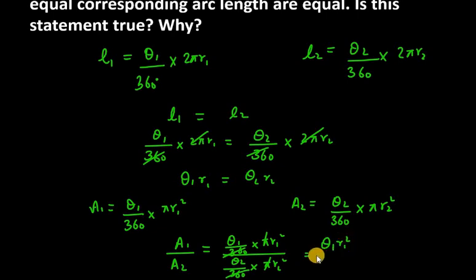You are left with θ₁r₁ square over θ₂r₂ square. Now θ₁r₁ and θ₂r₂ values are the same. We have verified that L₁ and L₂ are equal.